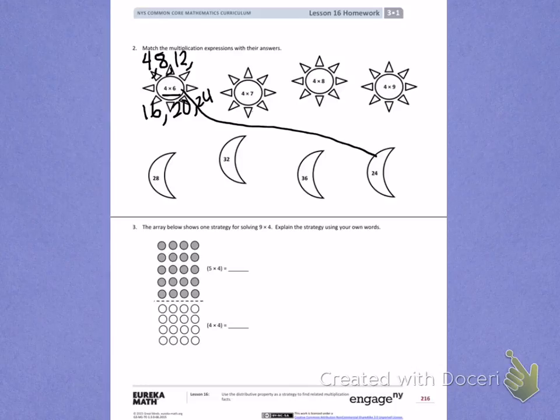Number 3. The array below shows one strategy for solving 9 times 4. Explain the strategy using your own words. In class today, we learned about the distributive property and how we can break apart large problems and distribute them into smaller problems to help us find the answer. I will walk you through how to solve this problem. Listen carefully so you can explain how we found the answer by writing that information next to the problem.